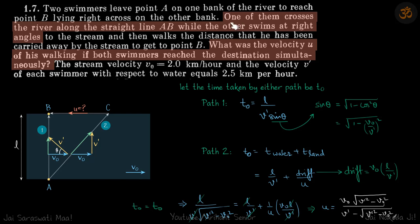We have two swimmers and one of them crosses the river along the straight line AB while the other swims at right angles to the stream and then walks the distance. What was the velocity u of his walking if both swimmers reached the destination simultaneously?